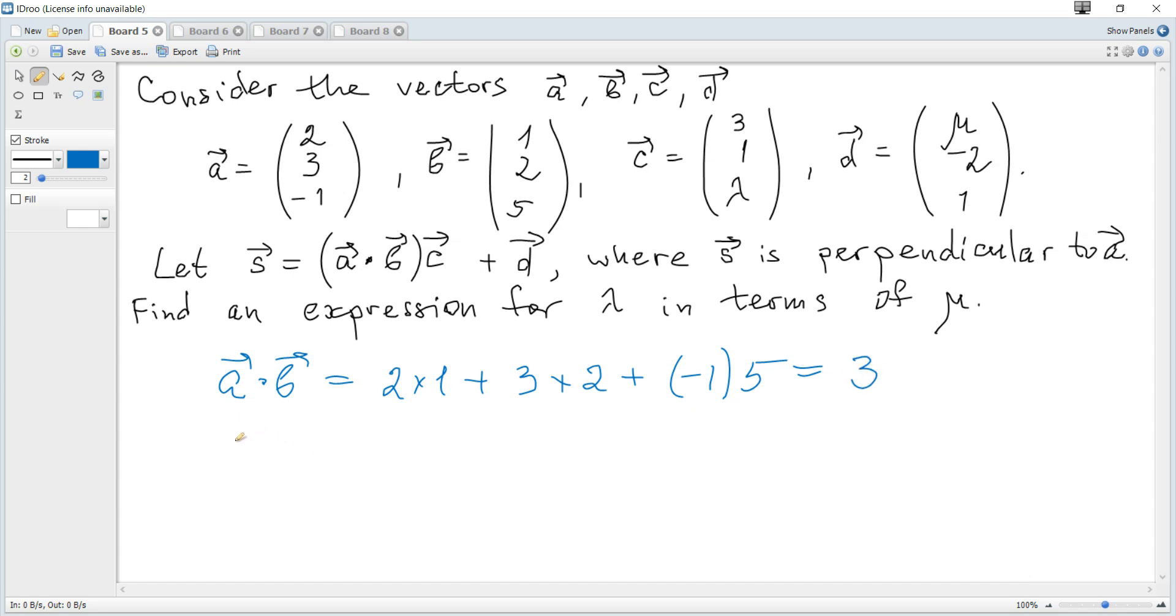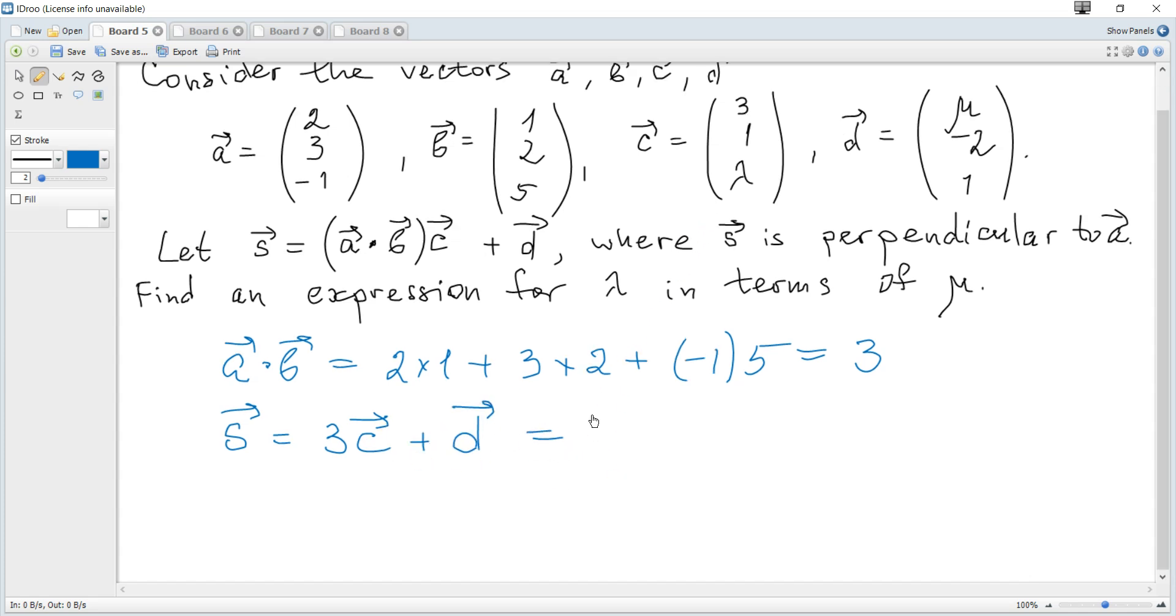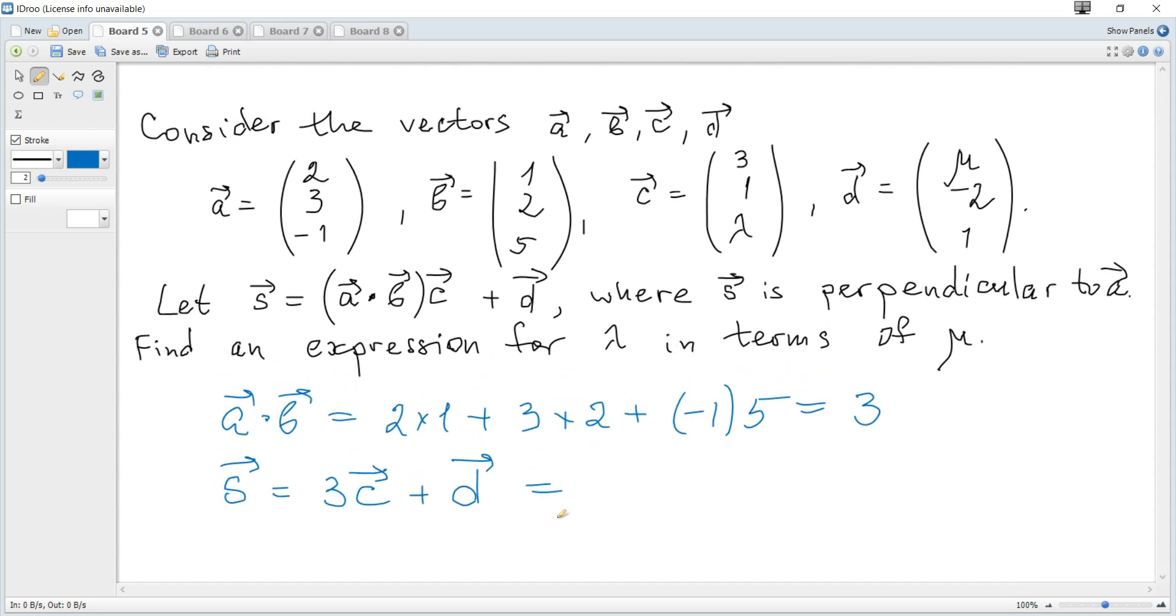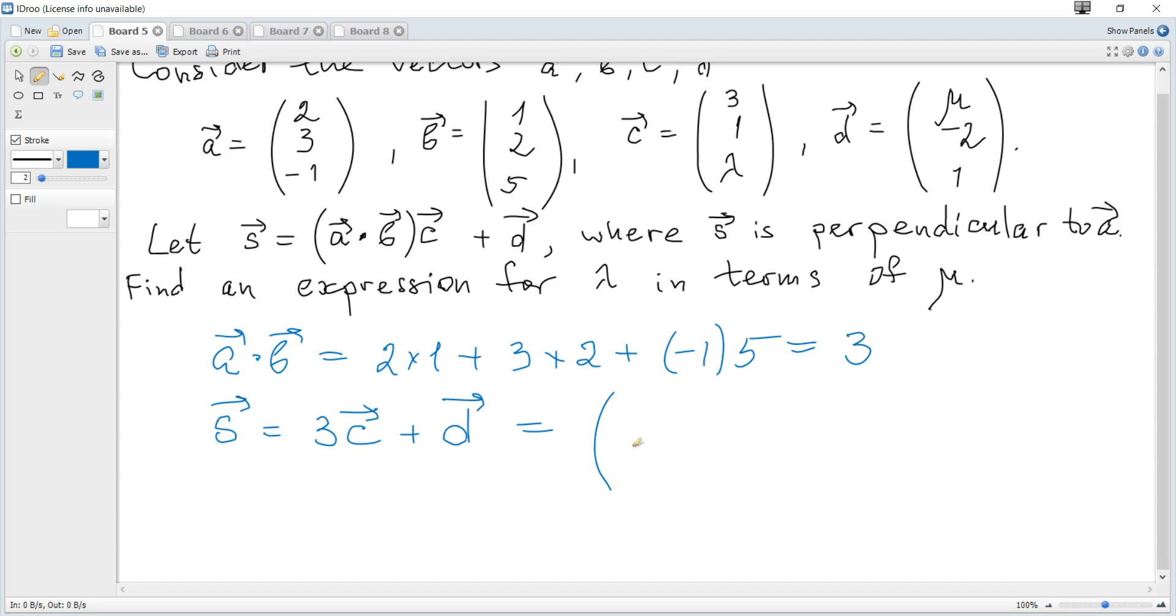So it becomes s vector becomes just 3, because the product result is just a number, 3 vectors c plus d vector. And what is c vector? The vector multiplied by a scalar, its coordinates just becomes 3 times larger, so it becomes 3 times 3, 9, 3, and 3 lambda, and plus d. What is d? It's mu, negative 2, 1.